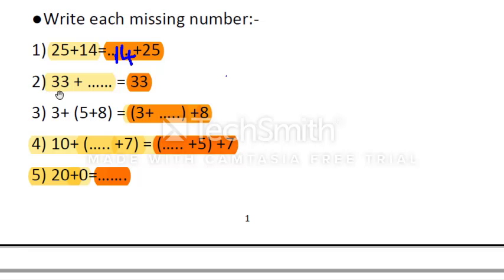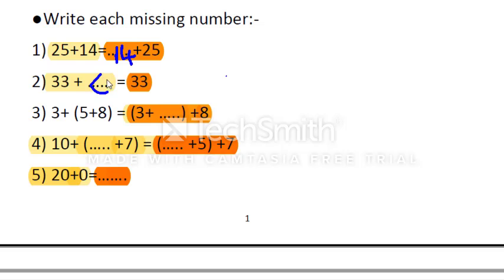Exercise 2: 33 plus what equals 33? What do we add to 33 to get the same number 33? It's 0. Using the identity property, 33 plus 0 equals 33.